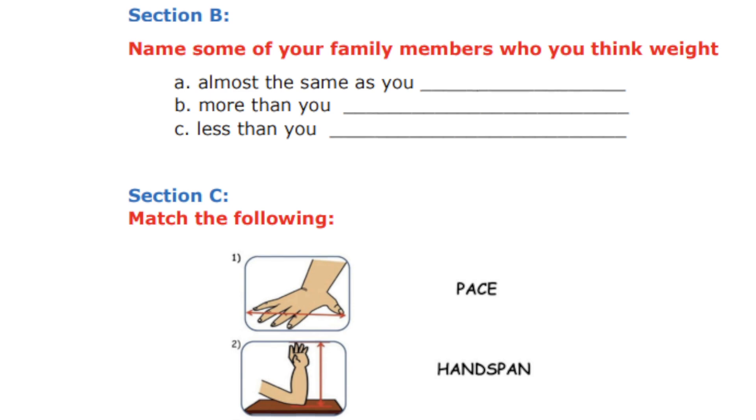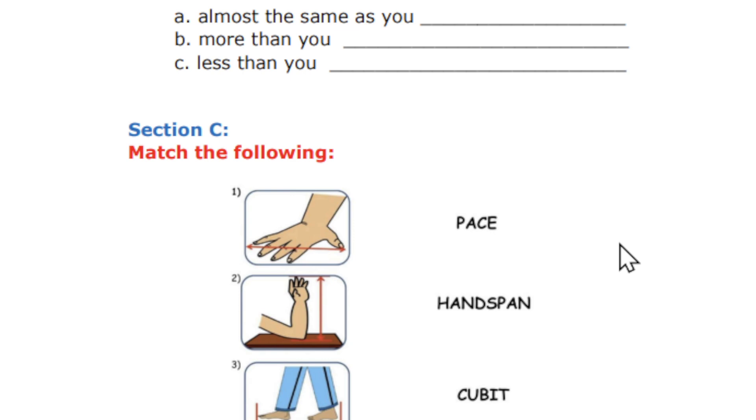So Section B is name some of your family members who think weight almost as you, more than you and less than you.